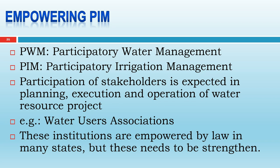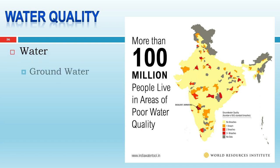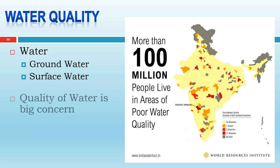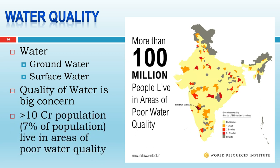Water quality is a most important concern. In India, more than 100 million people live in areas of poor water quality. The diagram shows spots where water quality standards are not followed, with the number of BIS standard breaches mentioned. We have two types of water — groundwater and surface water — and quality of both is a big concern. If we pollute groundwater, we are destroying the resource for future generations, as purification or recycling of groundwater is very difficult and the pollution is essentially irreversible.